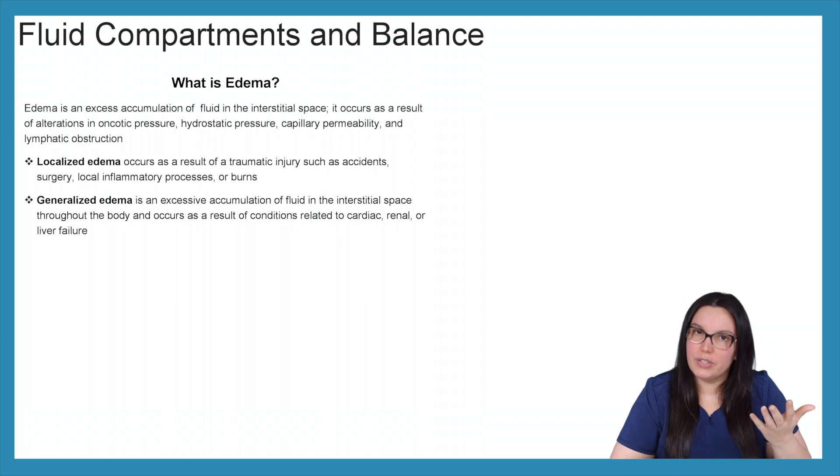So now that we know what third spacing is, then what is edema? How are they different? So edema is the excess accumulation of fluid in the interstitial space and it occurs as a result of alterations in oncotic pressure, hydrostatic pressure, capillary permeability, and lymphatic obstruction. So it's very different from our third spacing.